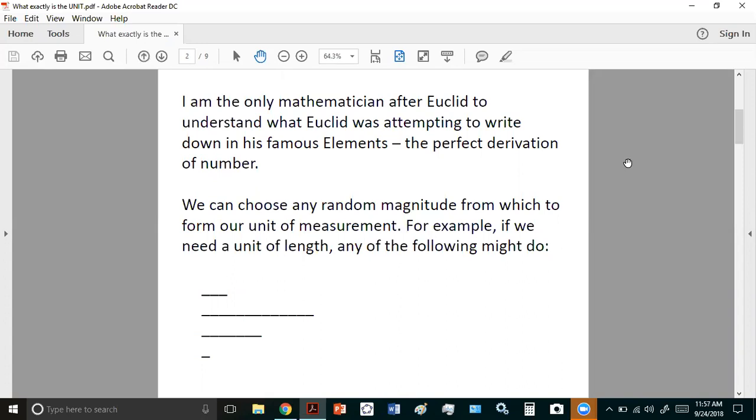And we can choose the unit from any random magnitude. For example, if we needed a length magnitude, we could choose that distance or that distance or that distance of this distance. And now notice that these distances are simply the measure of the length between the endpoints. There is no such thing as an infinite line. That's a myth. Infinity is a junk concept.